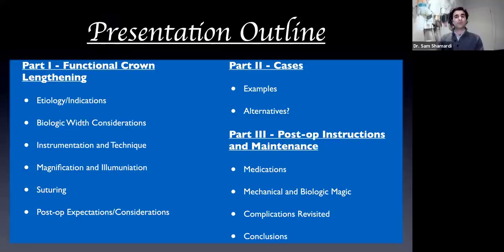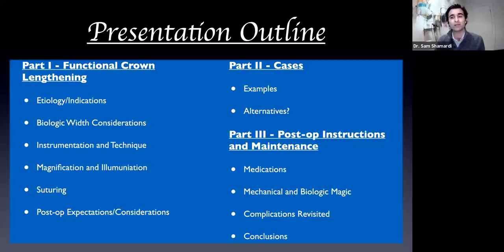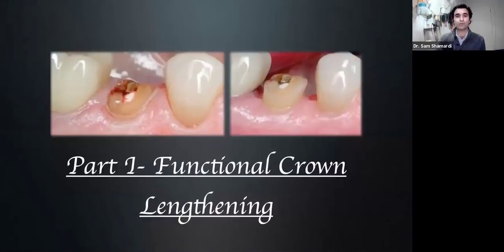Now that we've gotten through that introductory section, here's the presentation outline. First, we'll go over the etiology and indications for the procedure. We'll spend time on biologic width considerations, instrumentation technique, the importance of magnification and illumination, suturing, post-op expectations — which is probably the most overlooked section — and we'll show a couple of cases. We'll discuss potential alternatives and wrap up with post-op considerations, maintenance, medications, complications, and conclusions.